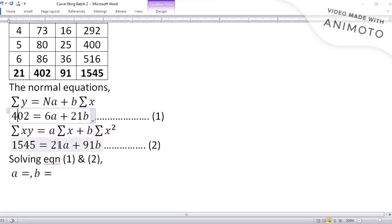Enter 6, 21, 402, then 21, 91, 1545. That will give us the value of a and b. According to the calculator, that will be x and y, but I am looking at the value of a and b. Equation mode, first option please.